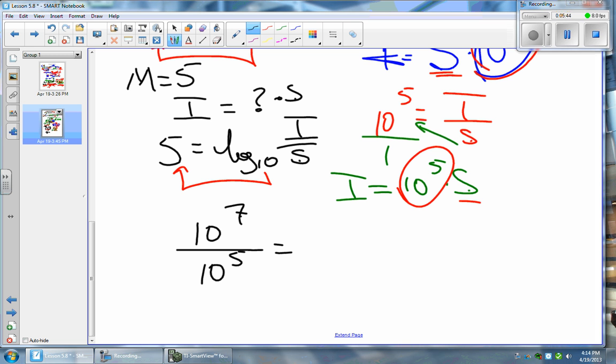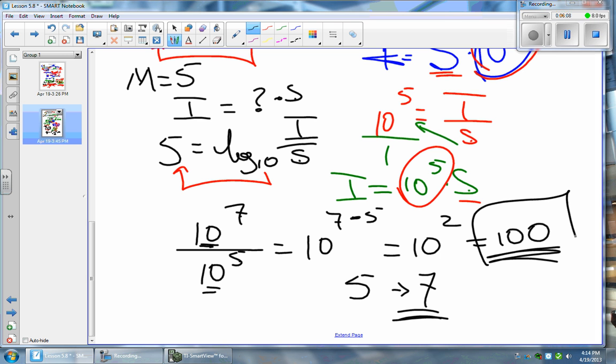Simple because why? Exponent laws - the bases are the same. All you have to do is subtract. 10 to the 7 minus 5 equals 10 to the 2, which means that this earthquake is, in fact, 100 times stronger. So a magnitude 5 earthquake compared to magnitude 7? Well, the magnitude 7 earthquake is 100 times stronger. And that's how you figure these guys out.